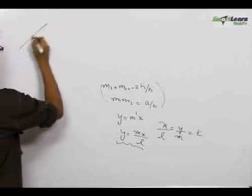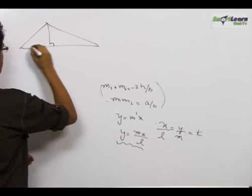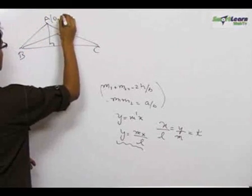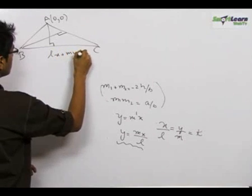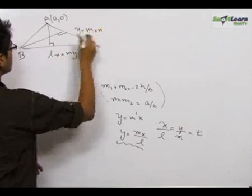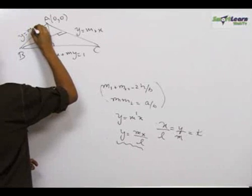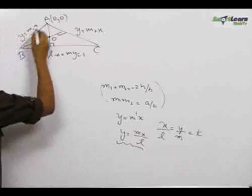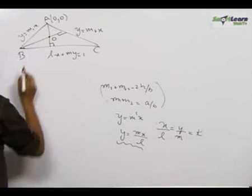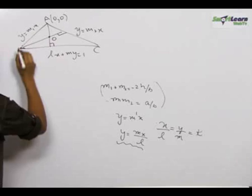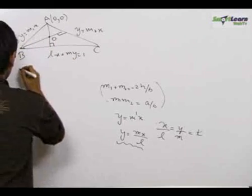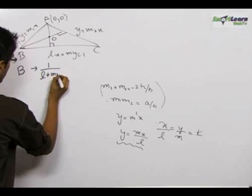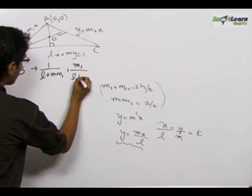Let us redraw the triangle again. A, B, C at 0,0, Lx plus My equals 1, y equals m2x, y equals m1x, and this was our orthocenter O. On solving the lines AB and BC we can very easily get the coordinates of point B. So solving y equals m1x and Lx plus My equals 1 we get the coordinates of point B as 1 upon L plus Mm1, m1 upon L plus Mm1.